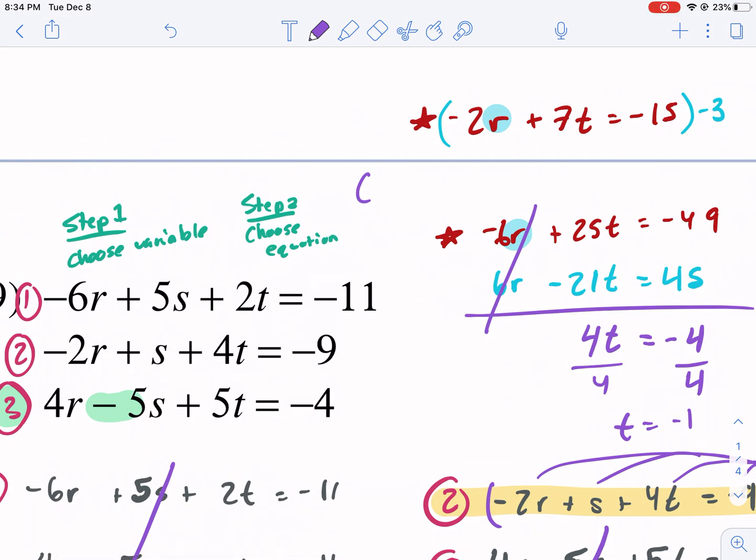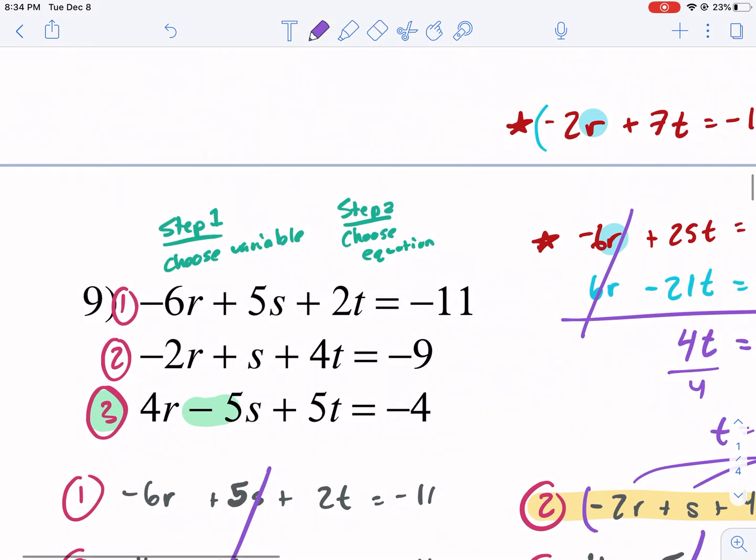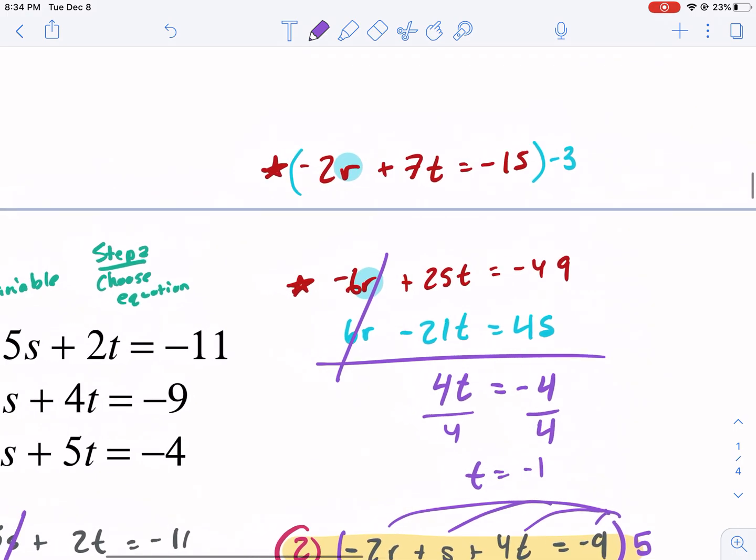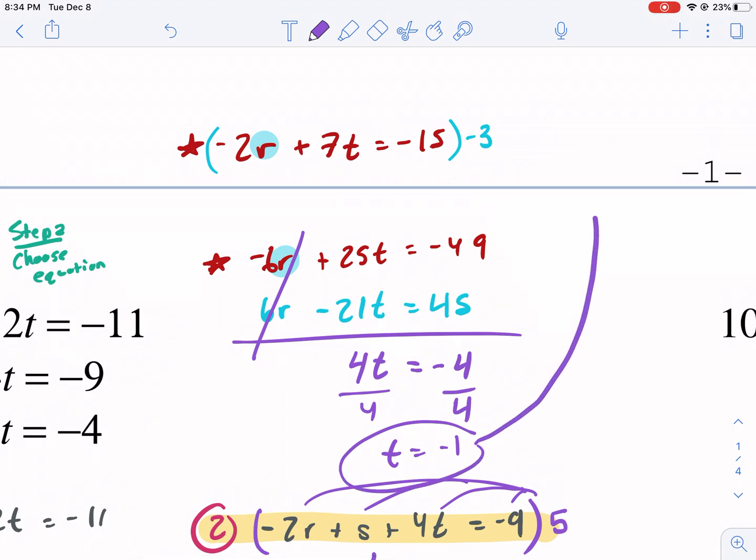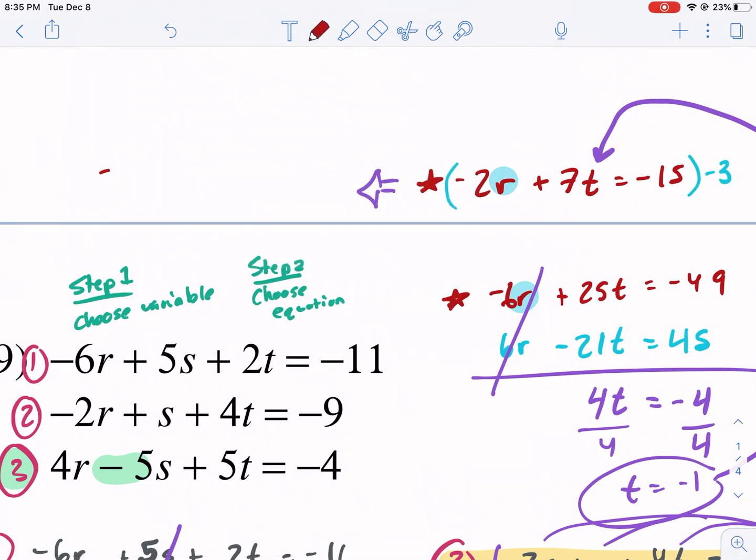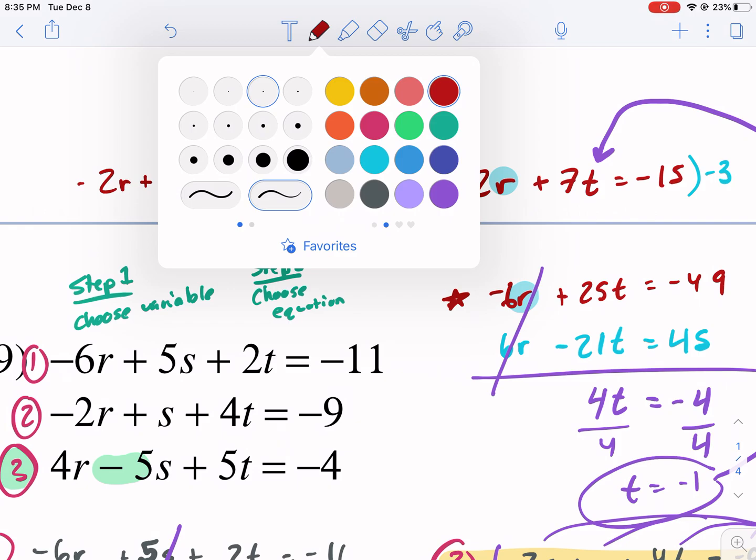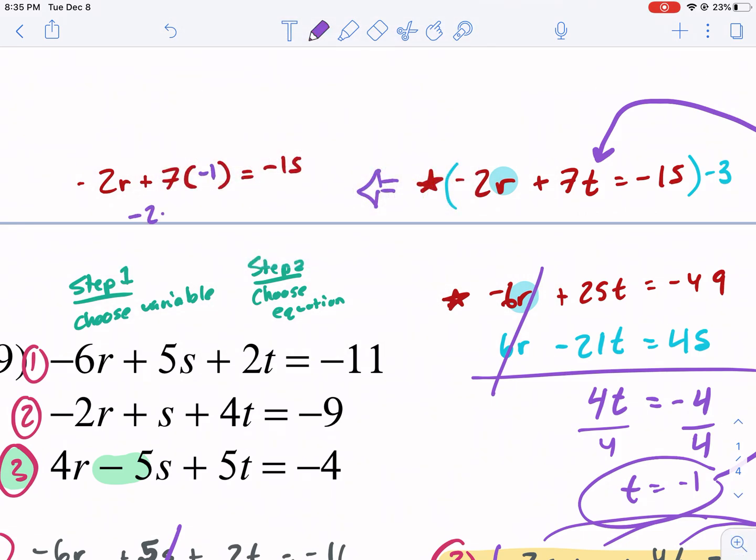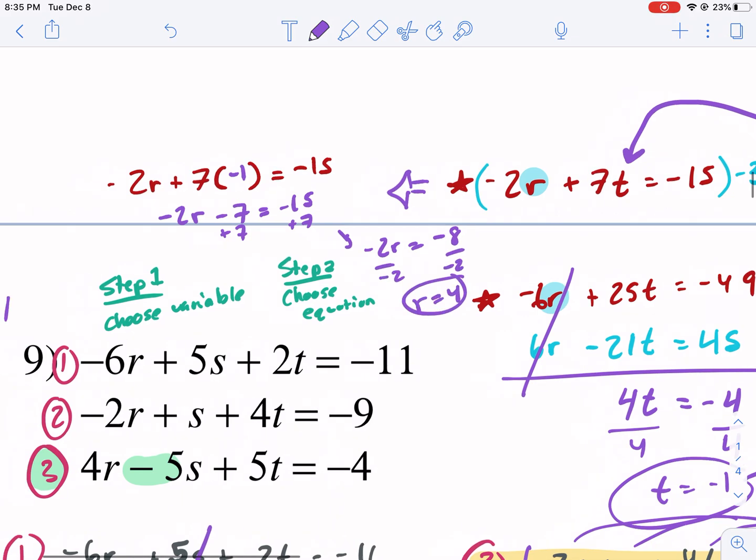Okay. So I got T equals negative one. It goes in alphabetical order. So T equals negative one, but we still have to find S and we still have to find R. Well, the good news is we can find R pretty easily because we just need to plug it back in. So I'm going to plug T equals negative one for T here and solve for R. So I'm going to rewrite this equation. Negative two R plus seven T. This time I'm substituting equals negative 15. I already know that T equals negative one. So I get negative two R minus seven equals negative 15. I add seven, add seven. Negative two R equals negative eight divided by negative two. I get R equals positive four.